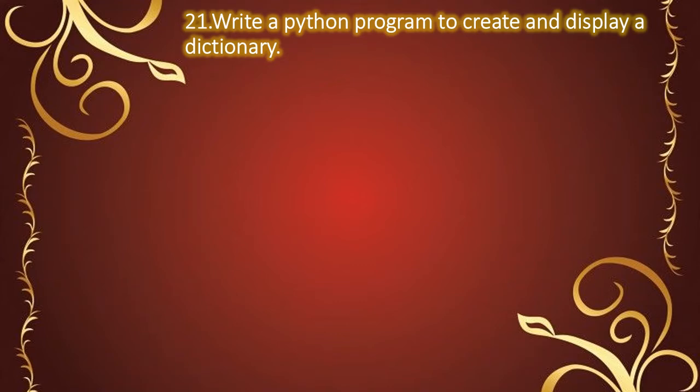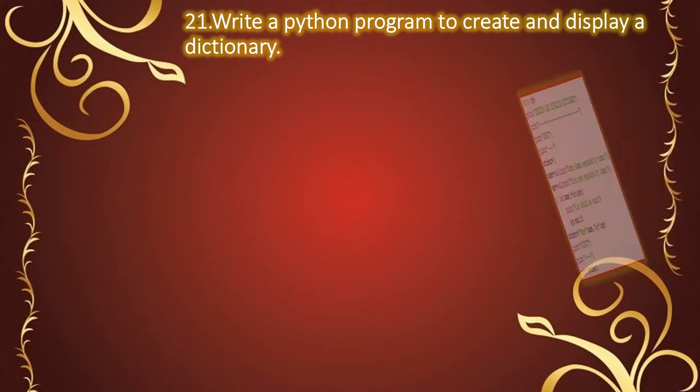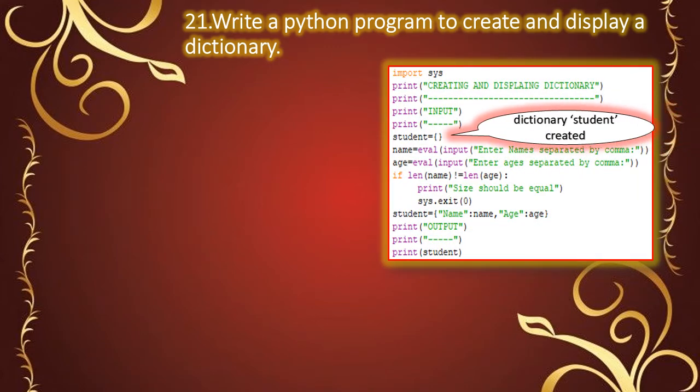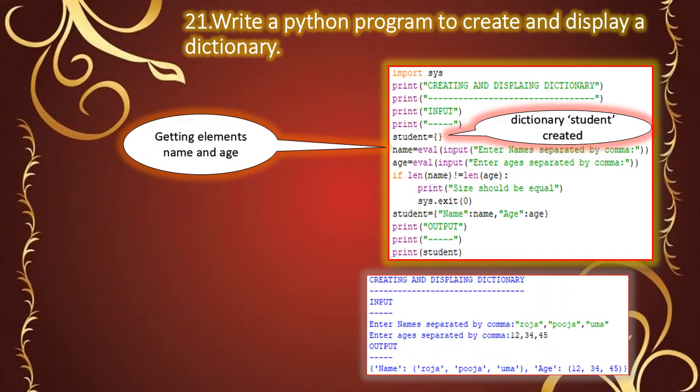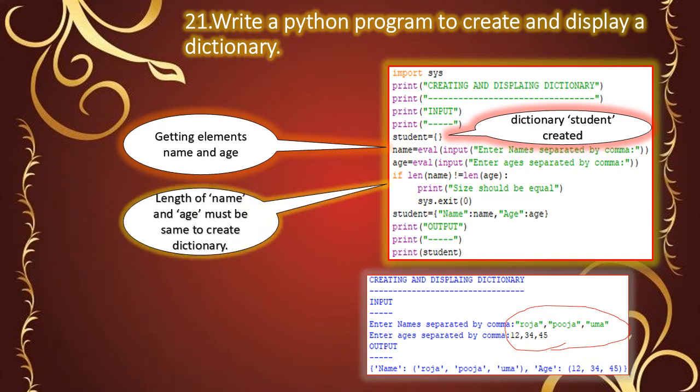First, we will create a simple dictionary and display it. This is created with empty curly braces. The dictionary name is 'student'. Next, we get the values for names: Roja, Pooja, Uma. Age values are also given.